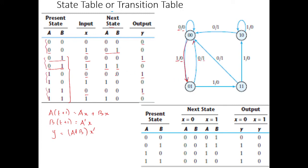The same information in the transition table can also be represented in a compact state table. There are four states: 00, 01, 10, and 11. The next state for each present state is given for input x = 0 and x = 1, along with the corresponding output y.